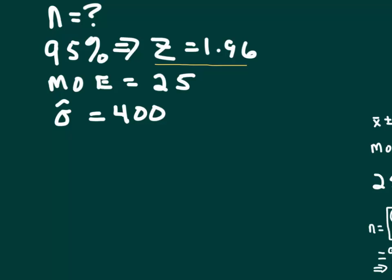It tells you that you have a margin of error of 25 and an estimate, that's all that hat means, you really don't even have to put it there, but I do, that's an estimate of the population standard deviation is 400.